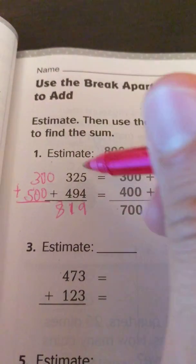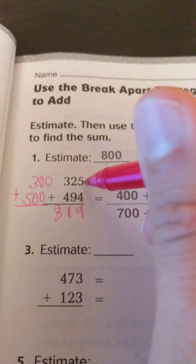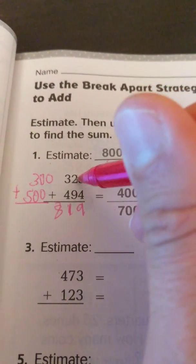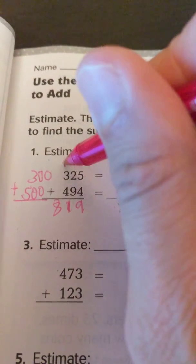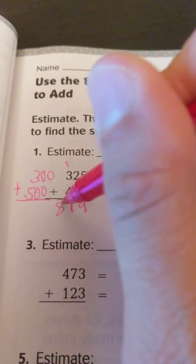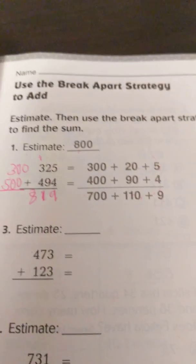If you went to do it vertically, 5 plus 4 is 9. 2 plus 9 is 11 in every group. 3 plus 1 is 4. And 4 plus 4 is 8. So it comes out the same way.